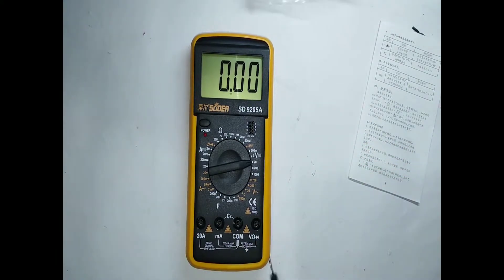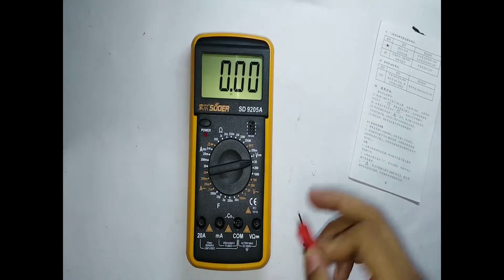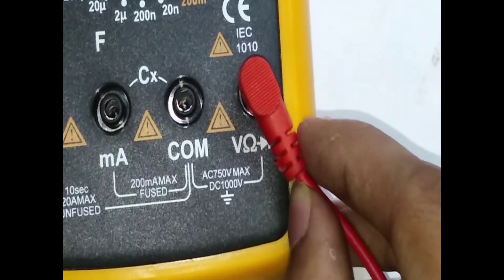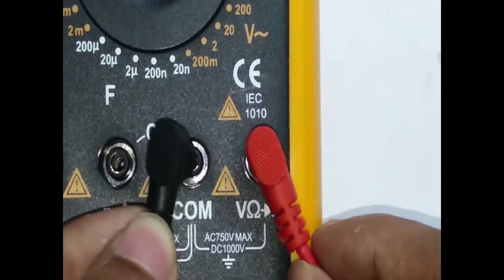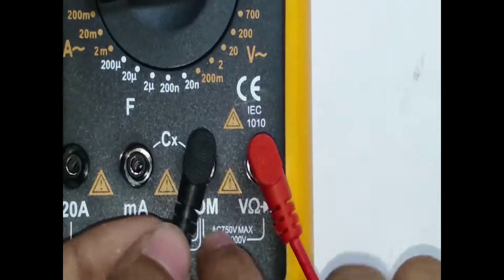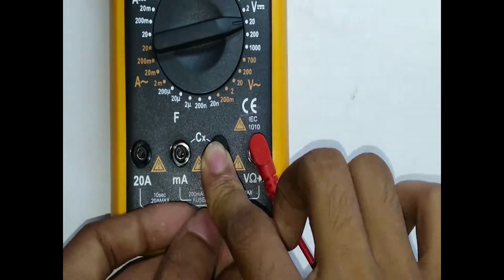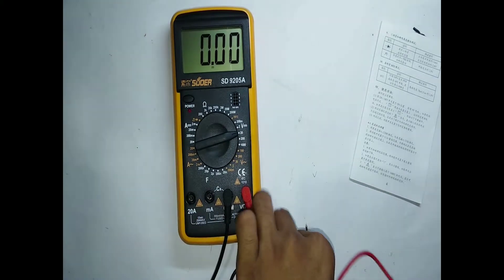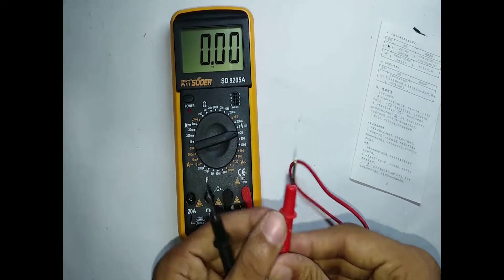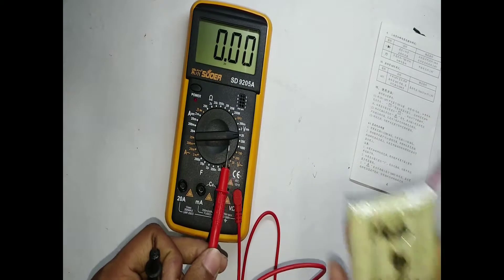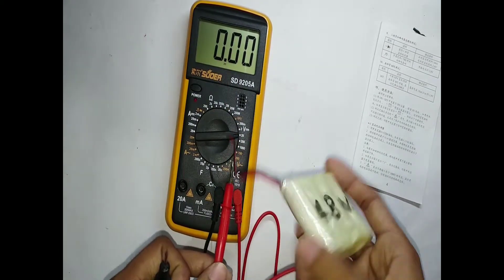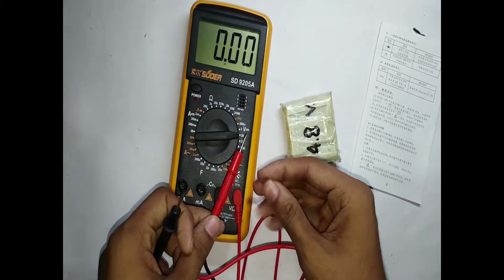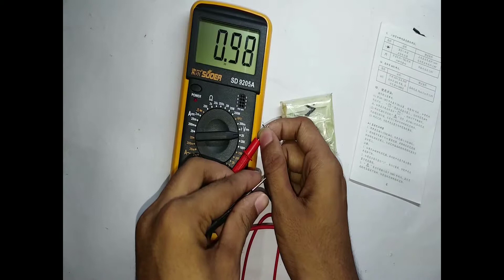Now connect the test leads, positive to voltage and negative always in common. This is the battery. I'll measure this battery. Connect positive test leads to its positive coil and negative.